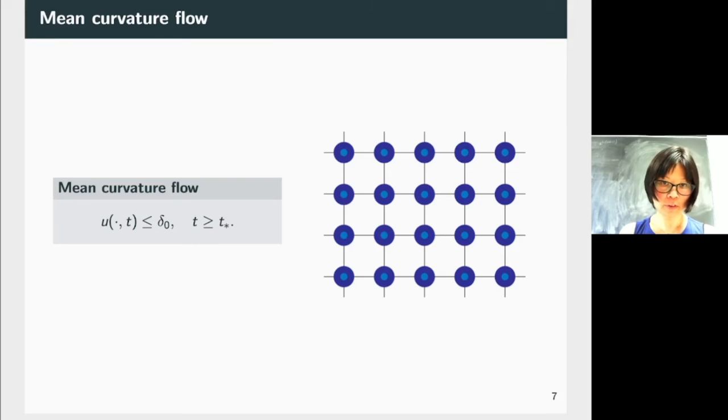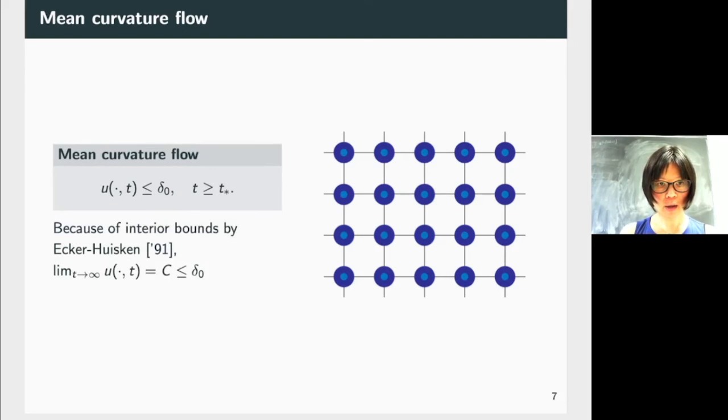This is a picture from above. Think about all the doughnuts in dark blue. The spike goes through the light blue and because of now we know that the mean curvature flow, the solution to the mean curvature flow U is less or equal than delta-naught.